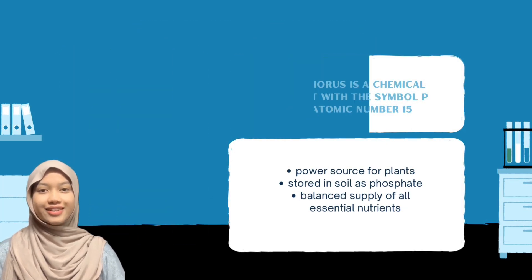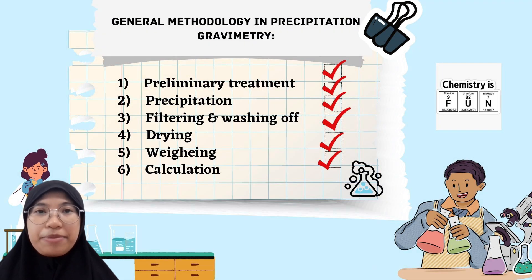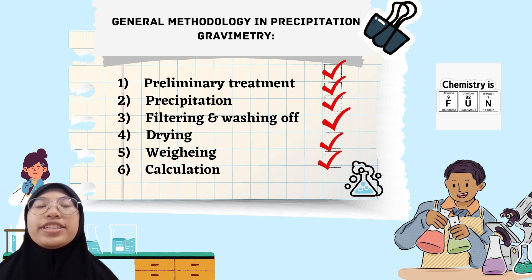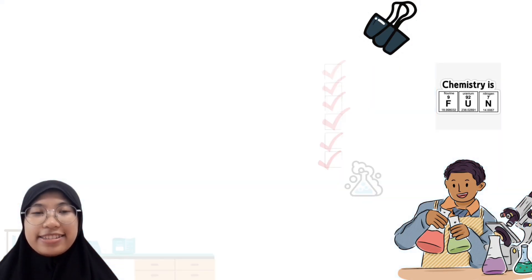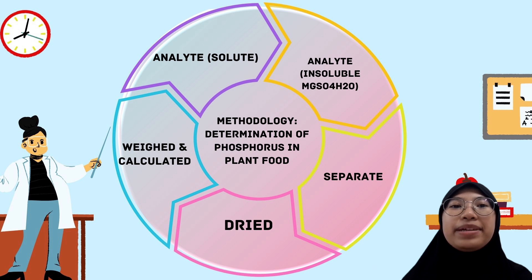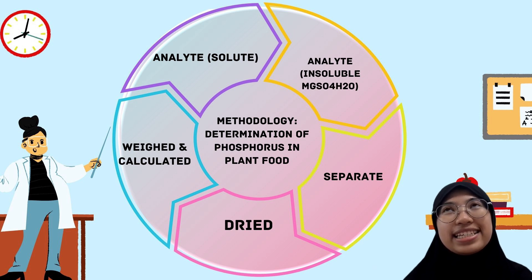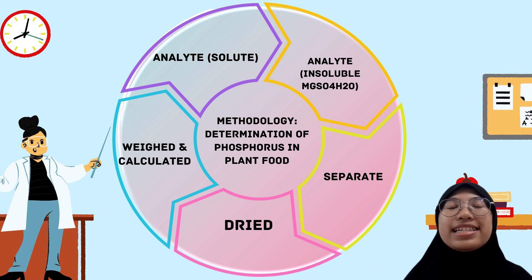For the general methodology in precipitation gravimetry, it requires six basic steps: preliminary treatment, precipitation, filtering, washing, drying, weighing, and calcination. Let's take a closer look at the application of this methodology in gravimetric analysis for plant food. As you can see in the flow diagram, the steps required in this application are simple and easy.